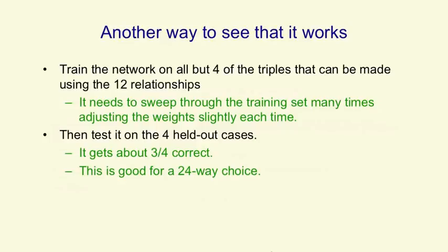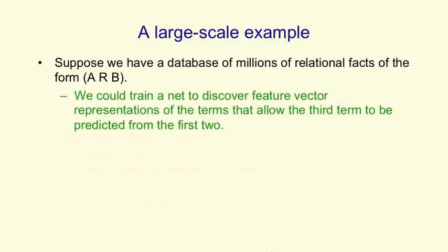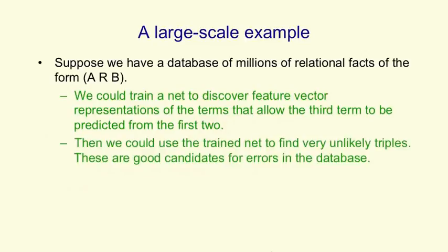That research was done in the 1980s as a way of showing that backpropagation could learn interesting features — it was a toy example. Now we have much bigger computers and databases of millions of relational facts, many of which are of the form A, R, B — A has relationship R to B. We could imagine training a net to discover feature vector representations of A and R that allow it to predict the feature vector representation of B. If we did that, it would be a very good way of cleaning a database — it wouldn't necessarily make perfect predictions, but it could find things in the database that it thought were highly implausible.